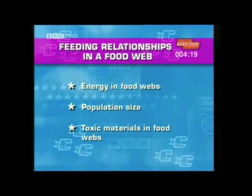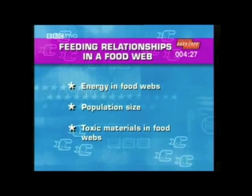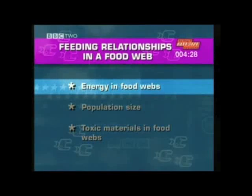This unit is split into three main sections: energy in food webs, population size, and toxic materials in food webs. Let's start with energy in food webs.